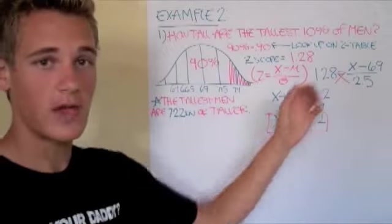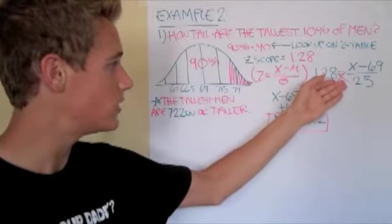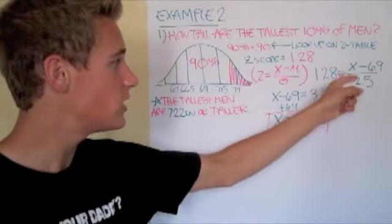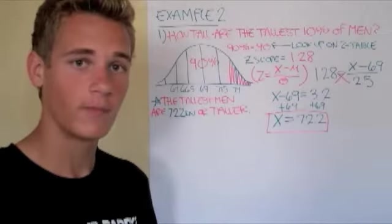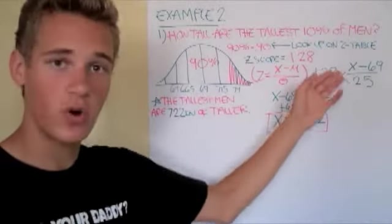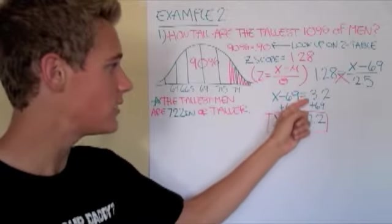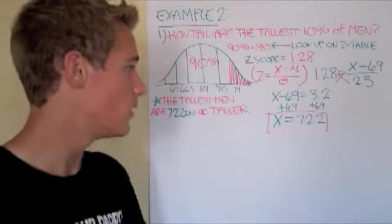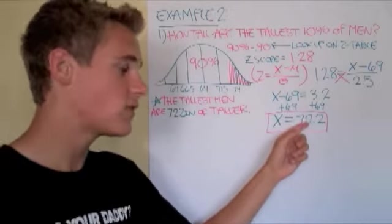In this equation, we have to work backwards, since we do not know x yet. So, we put 1.28, which is your z-score, equal to x minus 69 divided by 2.5. To figure this out, we have to cross multiply first, giving us x minus 69 equals 3.2. Then, we add 69 to both sides, giving us x equals 72.2.